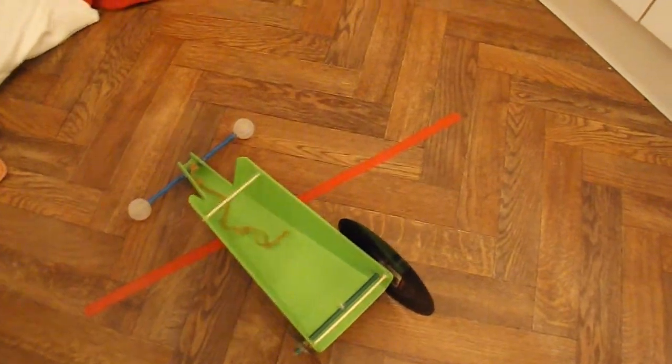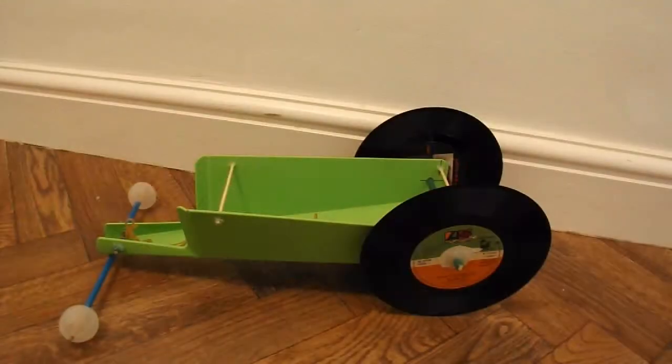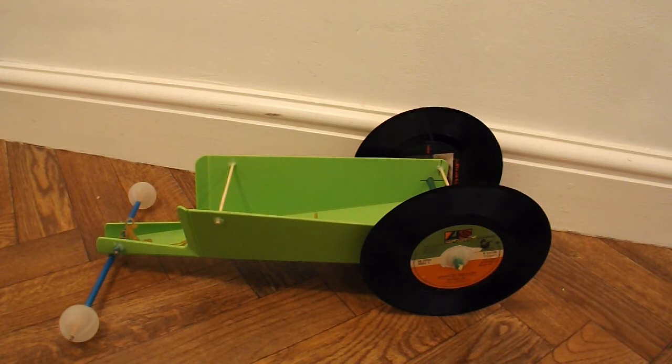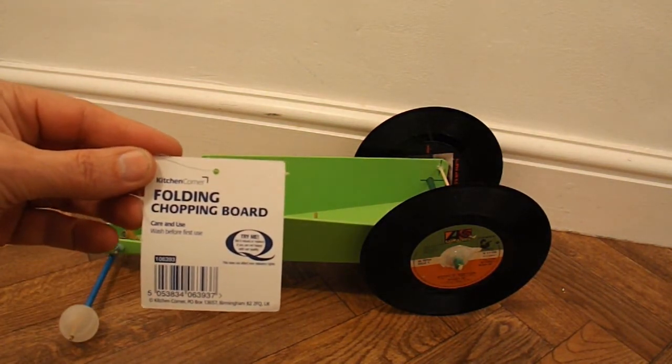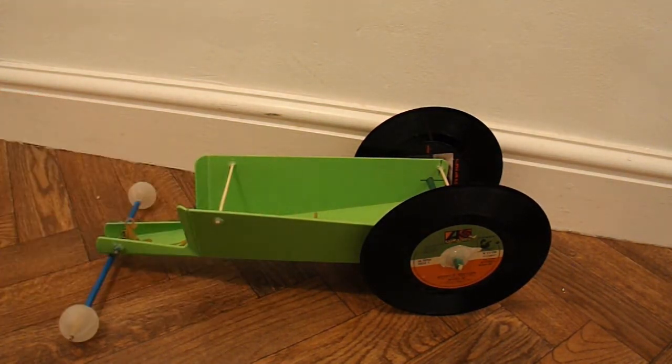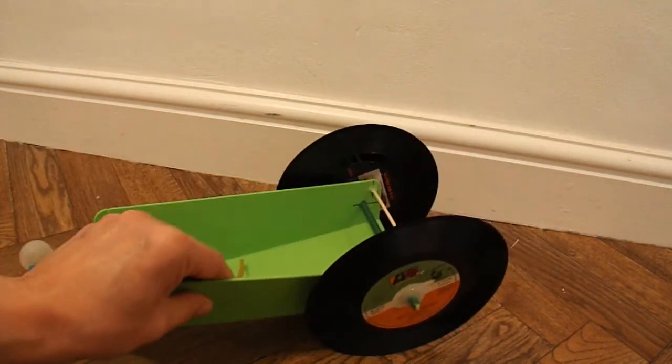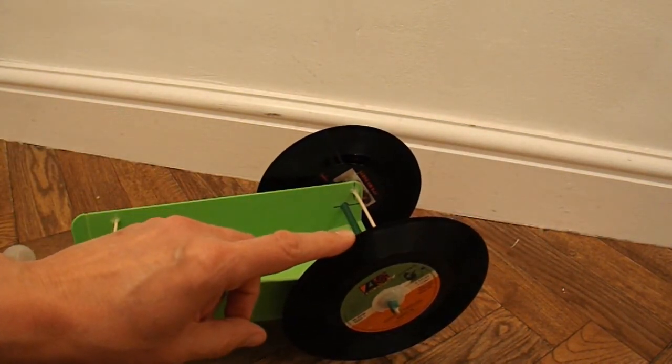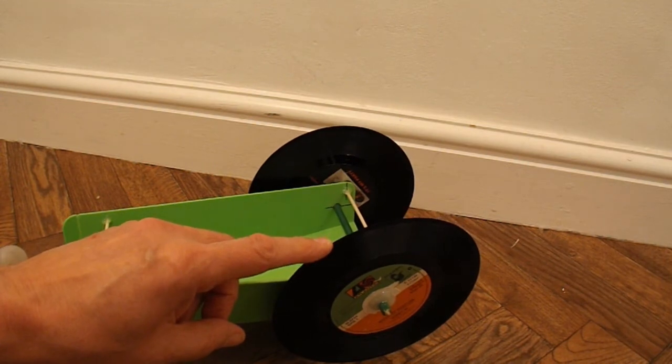So we'd better do a summary. Okay, what have we got here? We've got a folding chopping board. Back wheels are two vinyl records, singles.